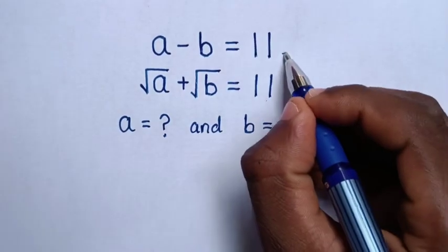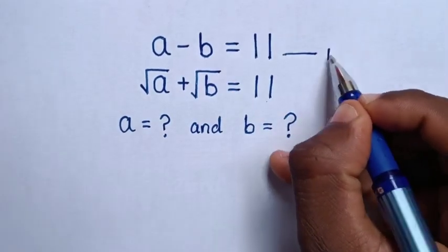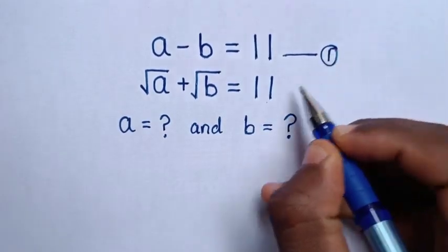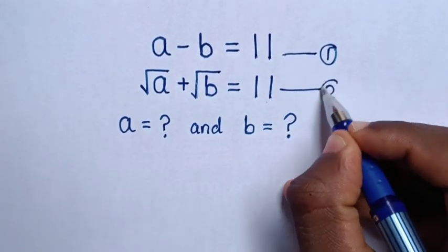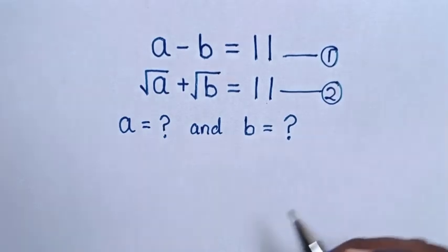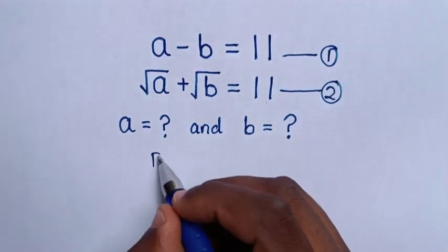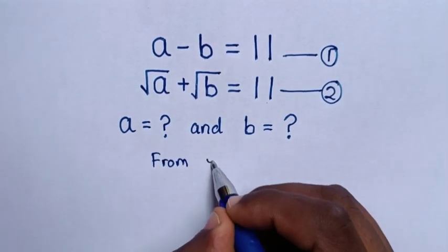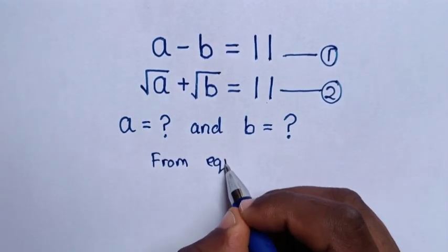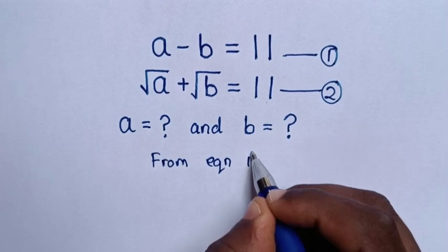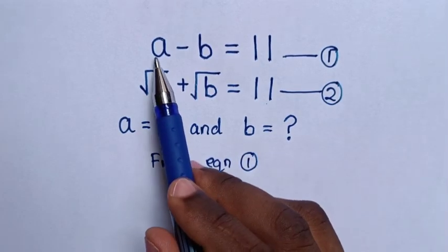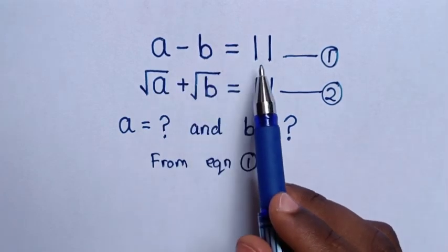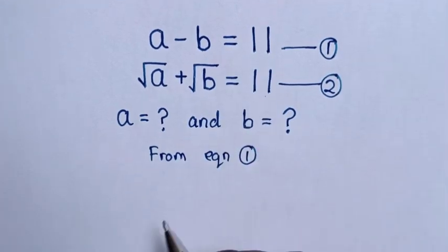First, we let a minus b equals 11 be equation 1, and square root of a plus square root of b equals 11 be equation 2.